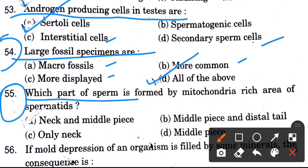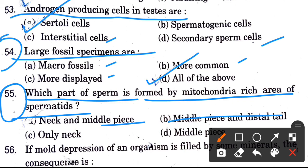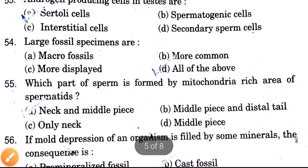Which part of the sperm is formed by the mitochondria-rich area? Options are neck, middle piece, and distal tail. The answer is neck and middle piece.